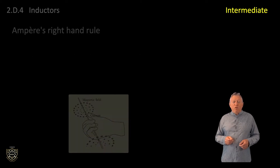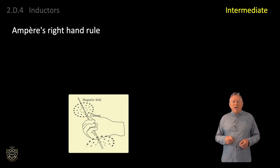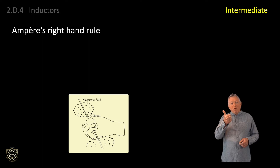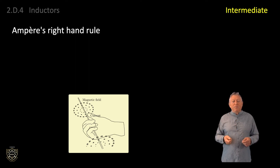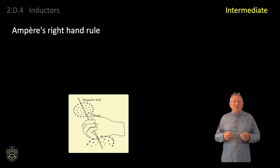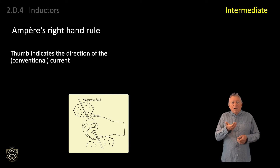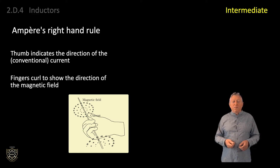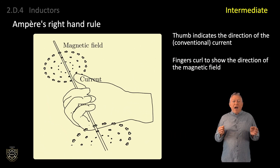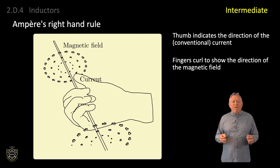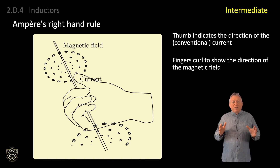Ampere's right hand rule — also known as the right hand grip rule — allows us to identify the relationship between the conventional current direction in a wire and the direction of the magnetic field. In the sketch, the thumb indicates the direction of the conventional current while the fingers curl to show the direction of the magnetic field. This graphic depicts a steady DC current.